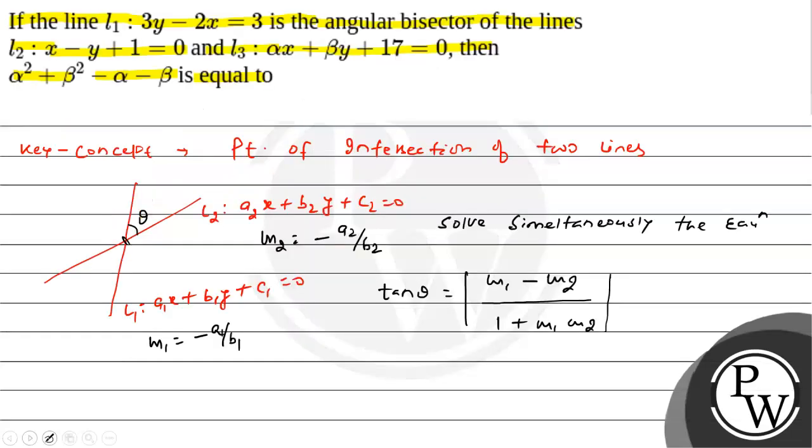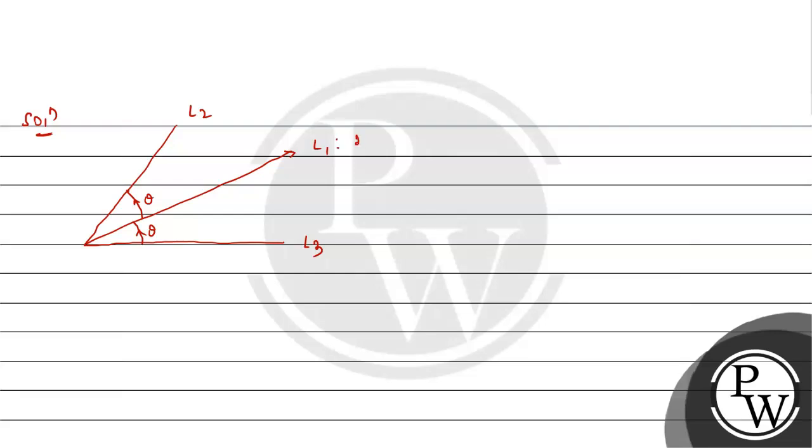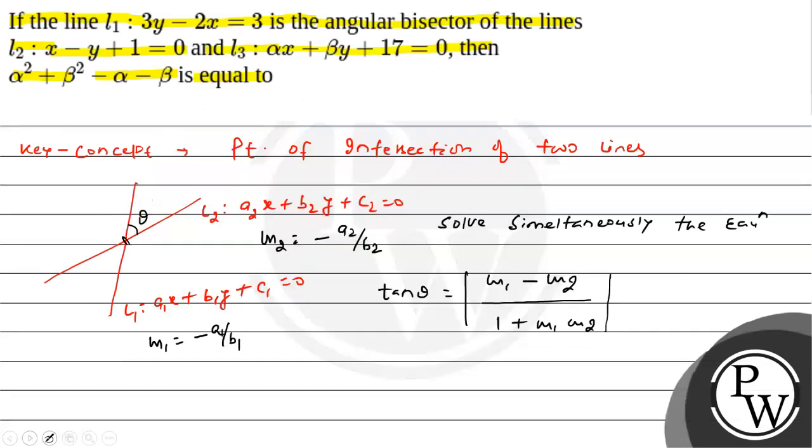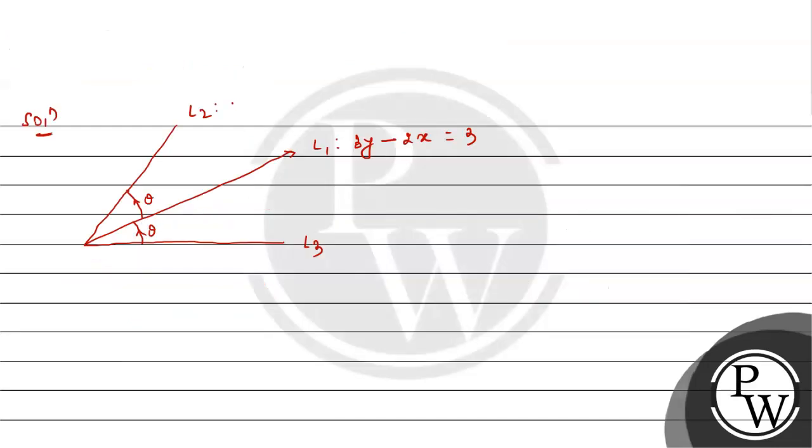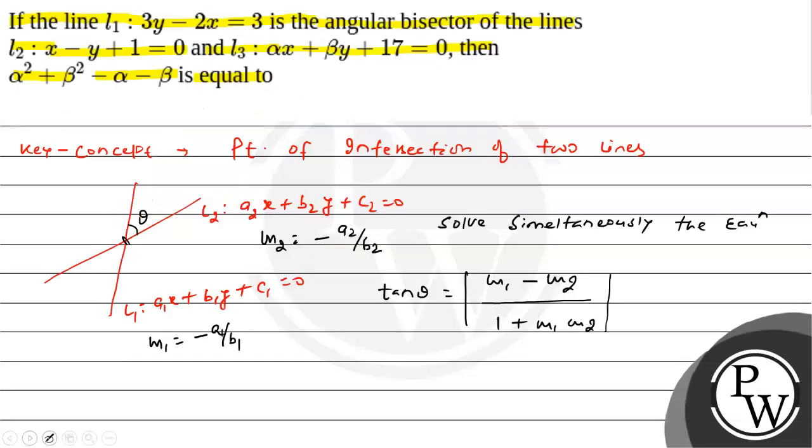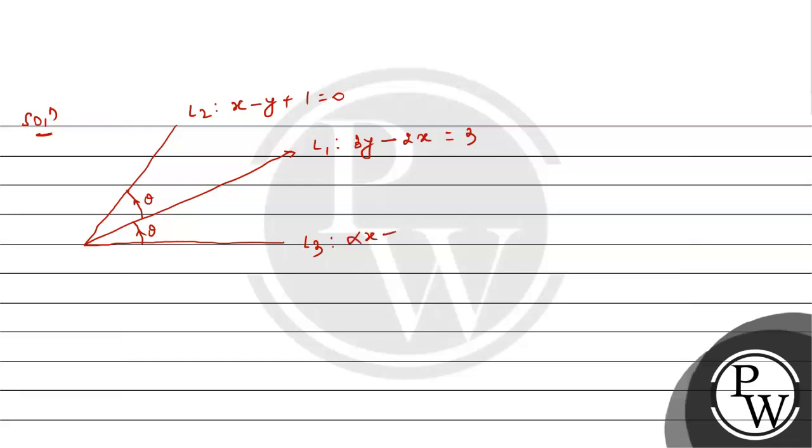L1 is given as 3y minus 2x equal 3 and L2 is x minus y plus 1 and L3 is given as alpha x plus beta y plus 17 equal 0. Strategy will be that first we will find this point of intersection. So L1 and L2 we will solve simultaneously. Then we can easily find our point P.